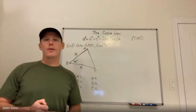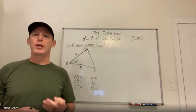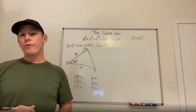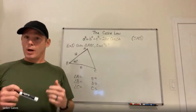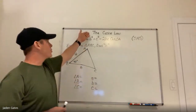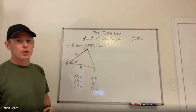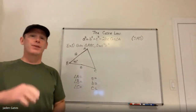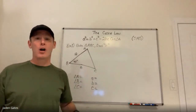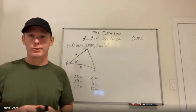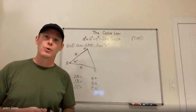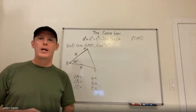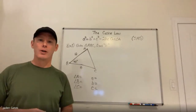Earlier today we looked at the sine law, which was used for non-right-angle triangles. Now we're going to move on to another law used for non-right-angle triangles — the cosine law. The sine law works for every non-right-angle triangle, and right triangles too, but there are two situations where it does not work, and that's when we need the cosine law.